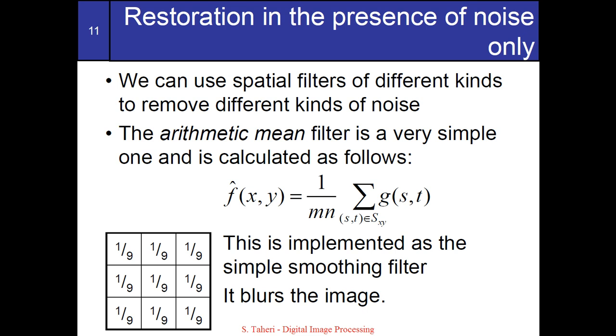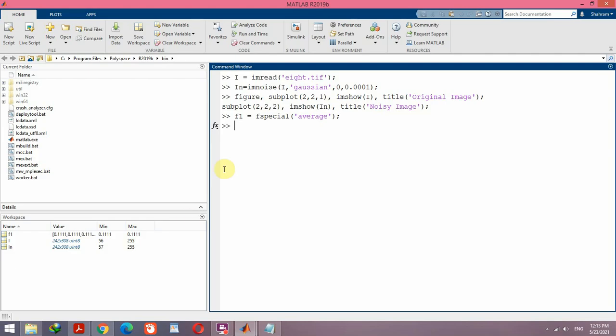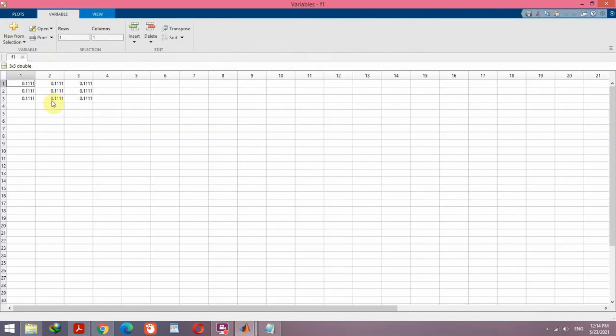By using fspecial function and average parameter I create a 3 by 3 filter. As you can see here, all of the values are equal and it is equal to 1 over 9.